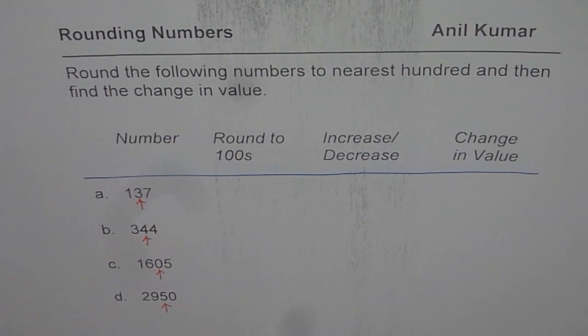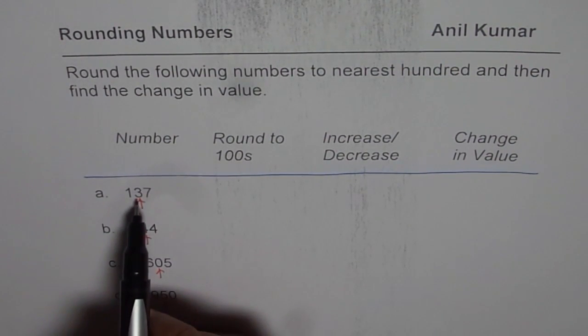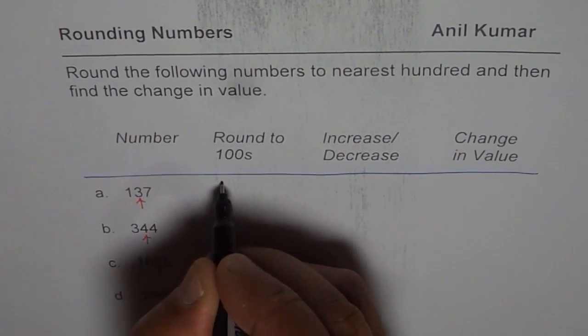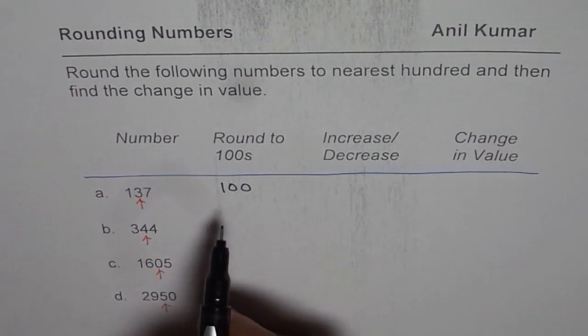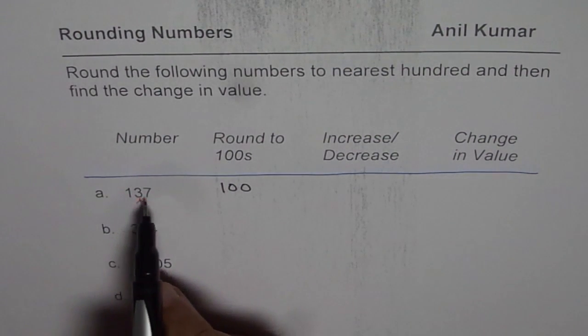For the first number, which is 137, tens place is 3. Since 3 is less than 5, it rounds to 100. So it rounds to a lower value close to 100, which is 100.